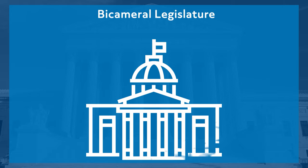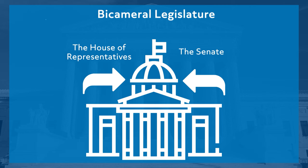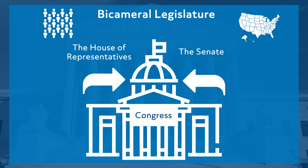The U.S. has what's called a bicameral legislature, simply meaning there are two separate chambers or houses within that branch of government. This is done in an attempt to balance the interests of the population with the interests of the states. These two chambers of the legislature form what we call the Congress.